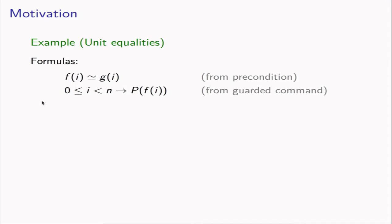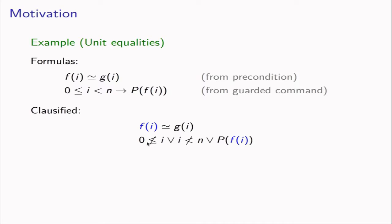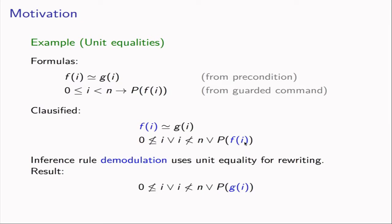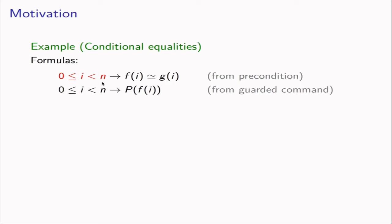We pass these two formulas to a theorem prover, and the first step is usually to clausify them. We end up with two clauses: first a unit clause with an equality, and second another clause containing the term f(i). We can use a rule called demodulation to rewrite f(i) into g(i), and furthermore demodulation tells us the original clause becomes redundant and can be deleted. Now in a modified example where the equality is conditional — a non-unit clause — demodulation can only apply to unit equalities, so we can no longer derive the same clause as easily.